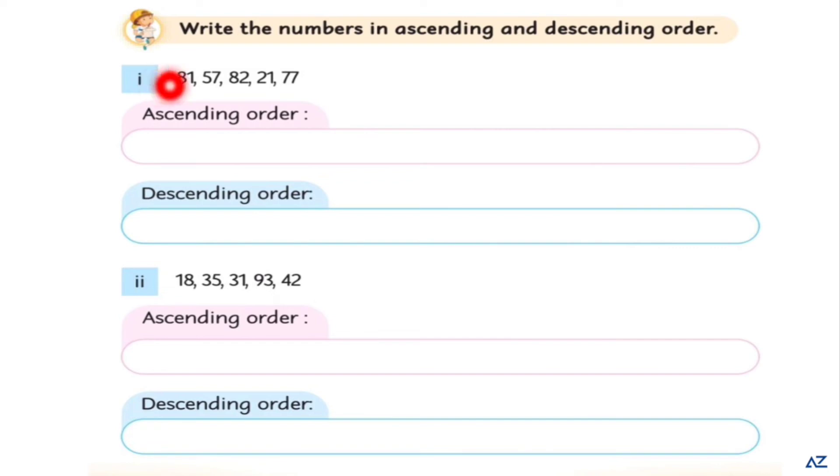Number 1: 81, 57, 82, 21 and 77. You will write these numbers in ascending order first and then descending order. Write in ascending order 21, 57, 77, 81 and 82.